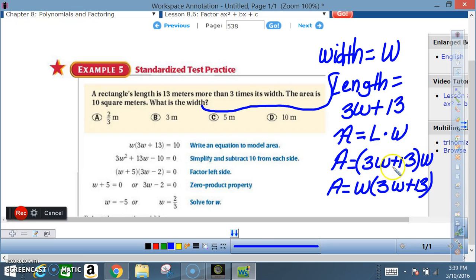since the length is 3w plus 13, we write that in place of l, and w once again is w. We can rewrite this in a way that you're more familiar with, that is with the w...